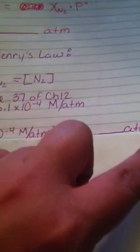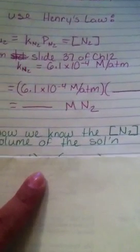So anyway, the atmospheres are going to cancel. And then we end up with a certain number of moles of nitrogen. Okay? So now we know that the molar, I'm sorry, this isn't moles of nitrogen, this is the molarity of nitrogen.